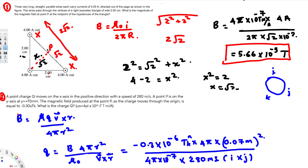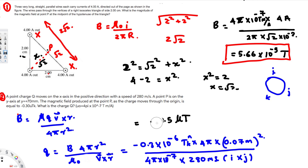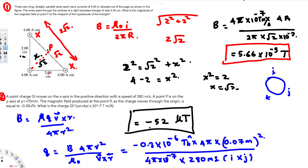Calculating this gives q = −52.5 microcoulombs. That's the final answer. I hope you guys find this video helpful.